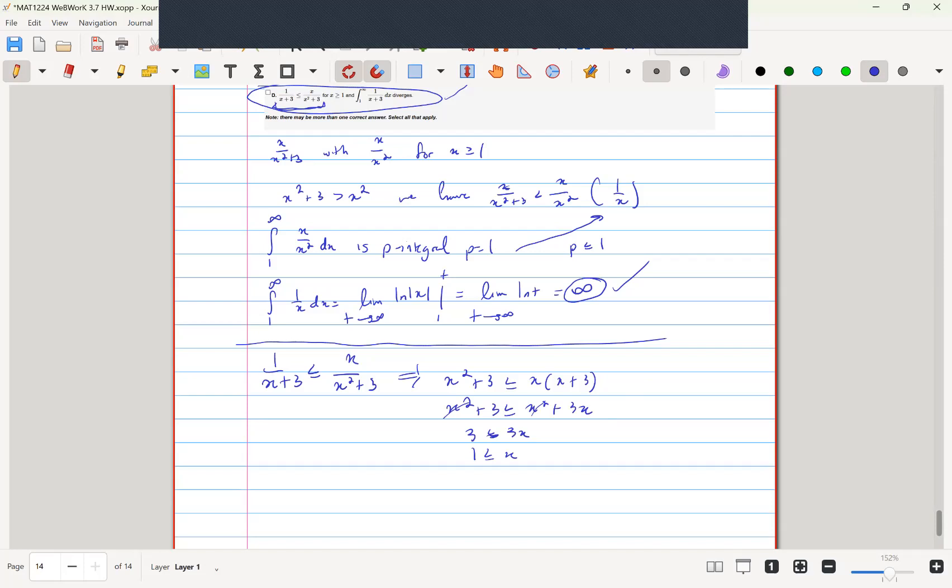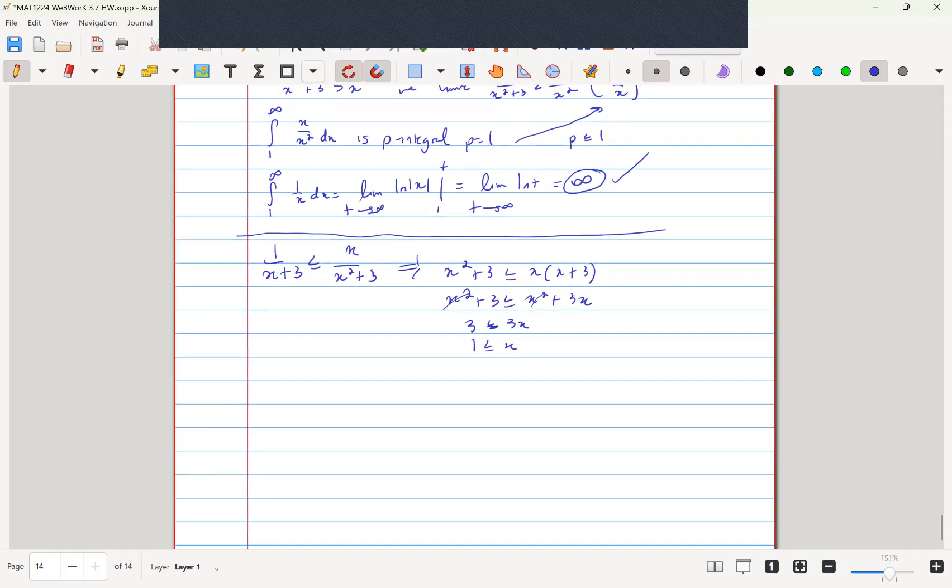Now the convergence of our integral, we already know to be infinity. We can figure this out using the integral from 1 to infinity of 1 over x plus 3. We know that diverges because it's equivalent to ln of x plus 3.